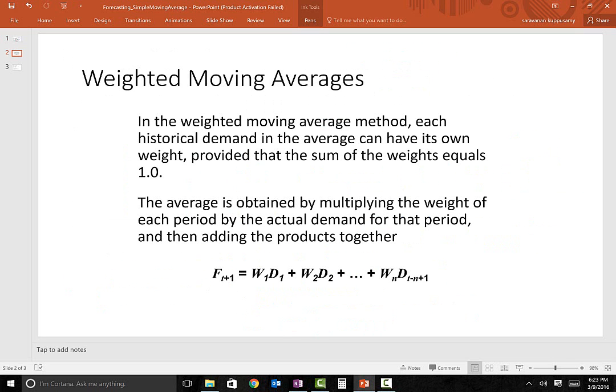In the weighted moving average method, each historical demand in the average can have its own weight, provided that the sum of the weights is equal to one. That's the key point here. Let's take the same example and see how the forecasted value changes if you use this weighted moving average.